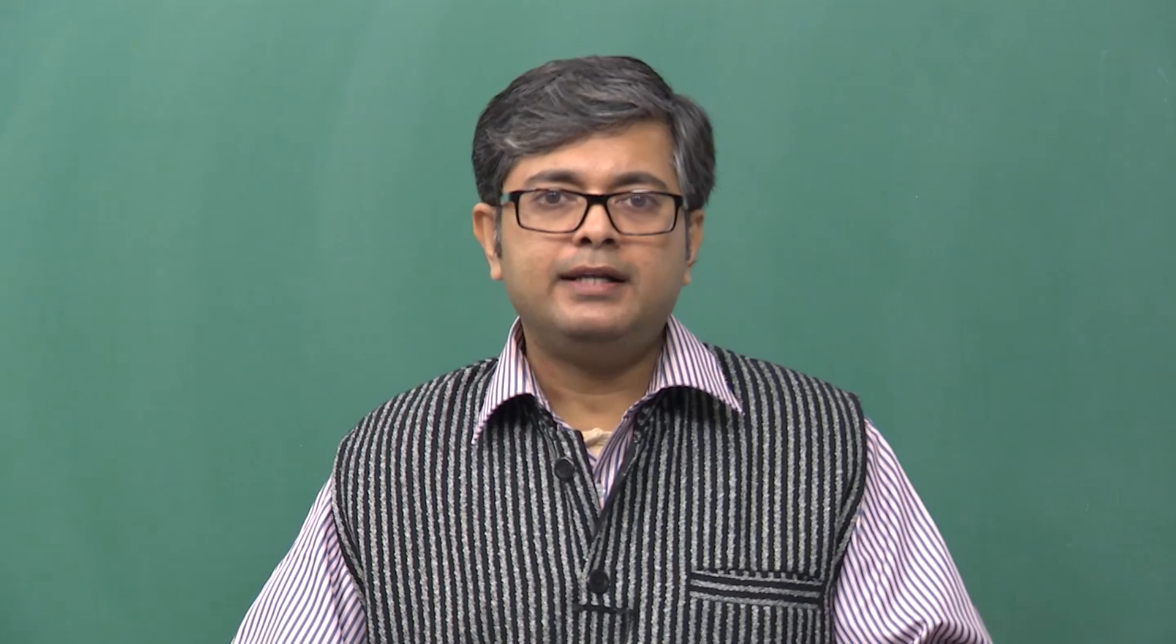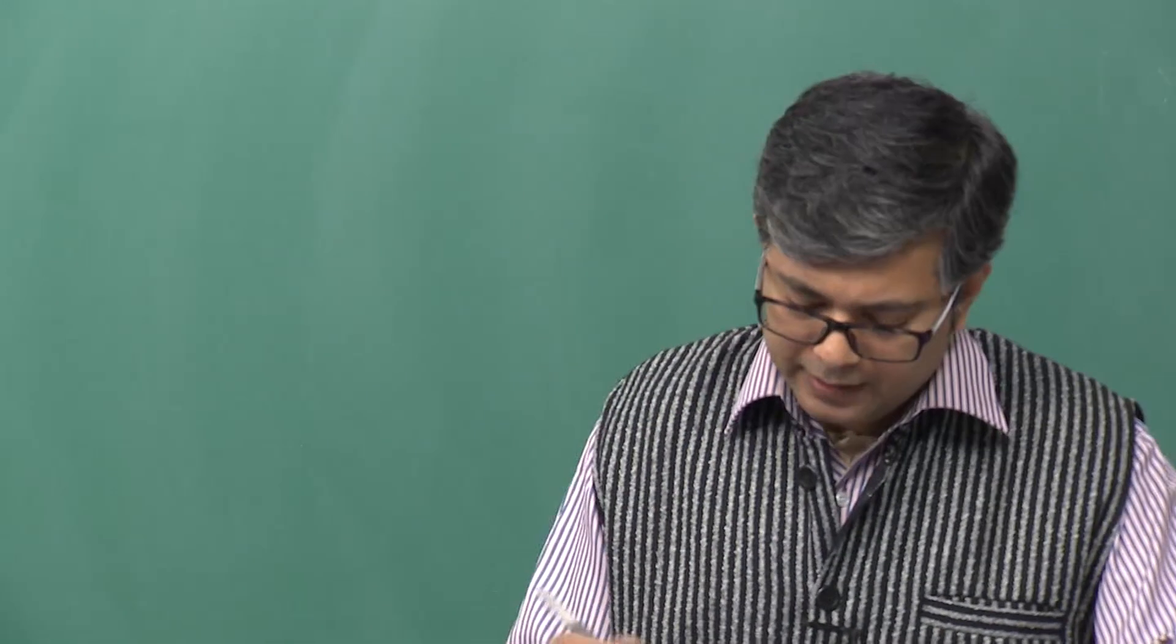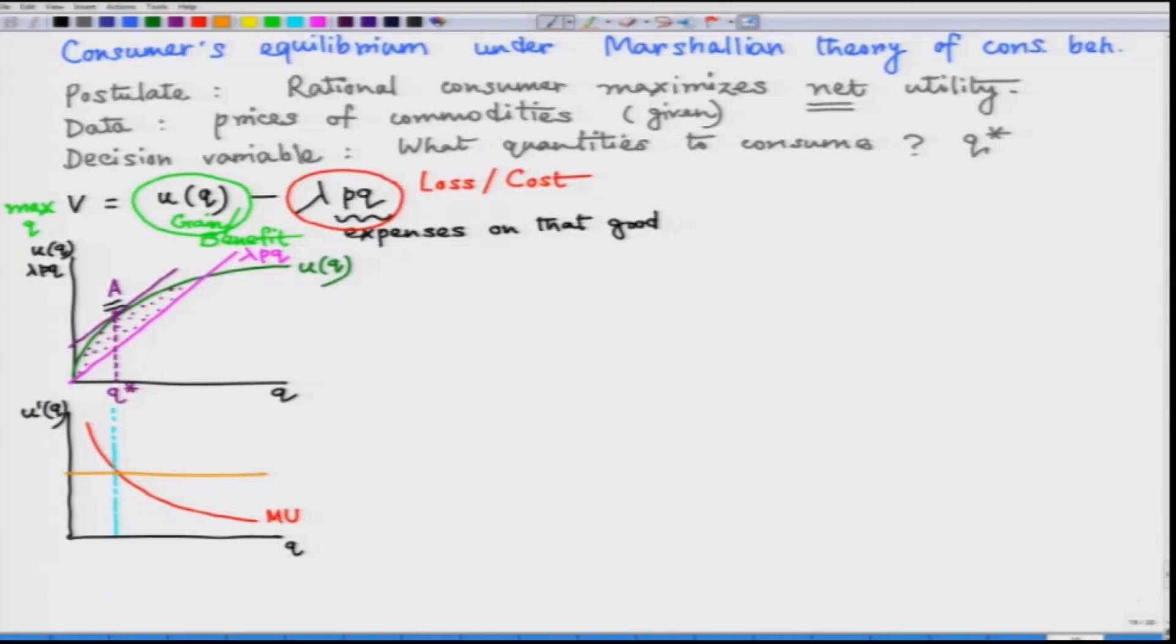Let us now have an alternative graphical representation of consumer equilibrium under Marshallian assumptions through marginal utility curve. For that let us now look at panel B diagram. Let us call this panel B and the above one is the previous one panel A. Now in the case of panel B diagram we have plotted a downward sloping marginal utility curve. This time we have drawn it as convex, it does not matter, it may have been a straight line also.